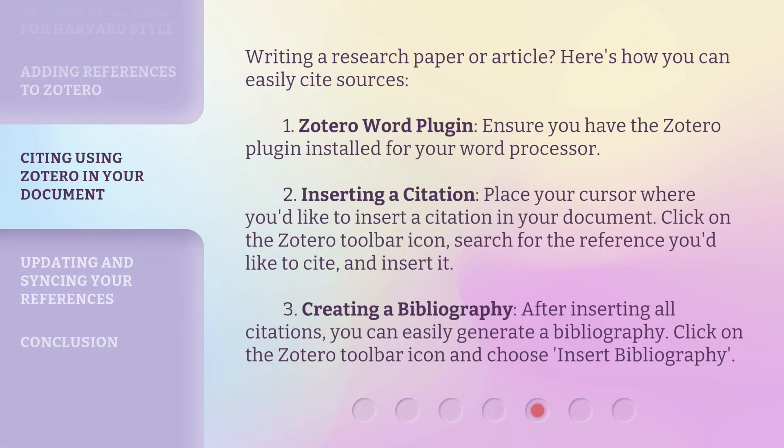Writing a research paper or article? Here's how you can easily cite sources. Step 1: Zotero Word Plugin — ensure you have the Zotero plugin installed for your word processor. Step 2: Inserting a citation — place your cursor where you'd like to insert a citation in your document, click on the Zotero toolbar icon, search for the reference you'd like to cite, and insert it. Step 3: Creating a bibliography — after inserting all citations, you can easily generate a bibliography by clicking on the Zotero toolbar icon and choosing 'Insert Bibliography'.